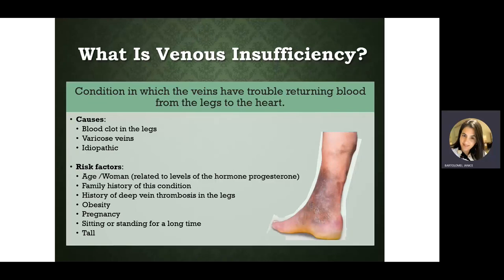This condition can be chronic. The walls of the veins become weakened and the valves become damaged. In the long term, blood pools downward in the legs because the valves normally propel blood flow back to the heart. When the valves and walls fail, everything sinks peripherally — in the ankles and feet.